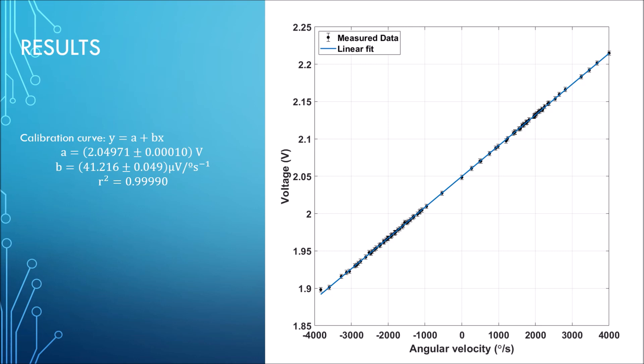This is the calibration curve. All these black dots are measurements showing the voltage output for both positive and negative angular velocities - that's clockwise and anticlockwise rotation. From the fit we can get the sensitivity, and this is a very linear fit because r-squared is so high. I'm very happy with these results.